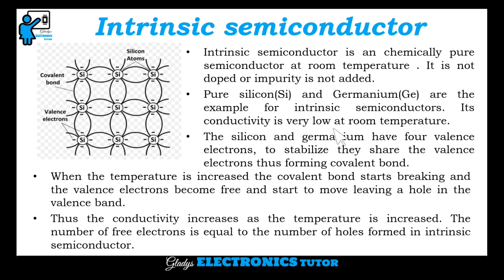Its conductivity is very low at room temperature. Silicon and germanium have four valence electrons. To stabilize, they share the valence electrons, thus forming the covalent bond. The valence electrons are shared between the silicon atoms. When the temperature is increased, the covalent bond breaks, and the valence electrons become free and start to move, leaving a hole in the valence band. Thus the conductivity increases as the temperature is increased.